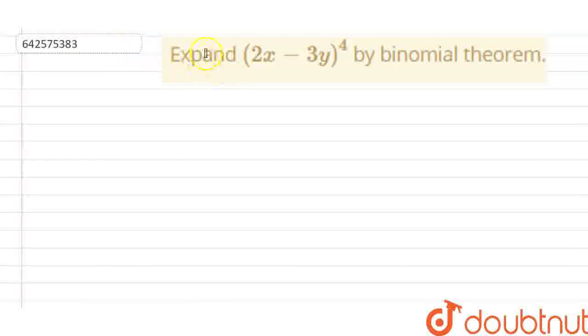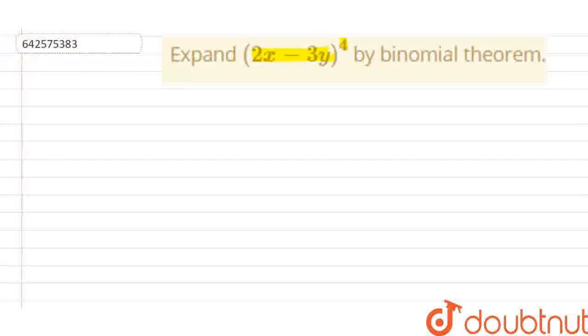Here, the question is: expand (2x minus 3y) whole raised to power 4 by binomial theorem.